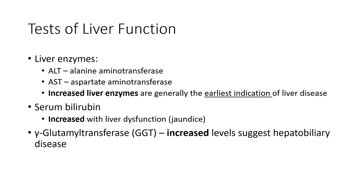Another test used in looking at liver function is serum bilirubin. If there is liver dysfunction, you will see an increase in serum bilirubin, and you might even see some jaundice. However, there are other causes of jaundice than liver damage, so that in itself is not diagnostic of liver disease. Finally, we will also look at gamma-glutamyltransferase, or GGT, a type of alkaline phosphatase and a measure of the excretory function of the liver. GGT can be suggestive of hepatobiliary disease when elevated, but again is not diagnostic. Your best bet is to look at your liver enzymes, particularly ALT. And that is our overview of the hepatobiliary system.